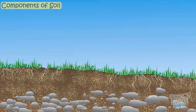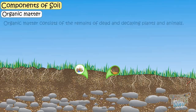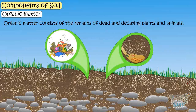Now let's learn the components of soil. First is organic matter — it is dead and decaying plant and animal remains.